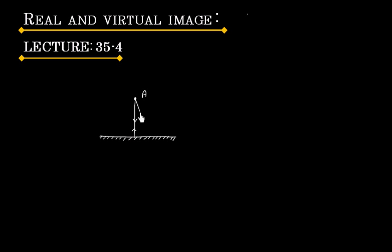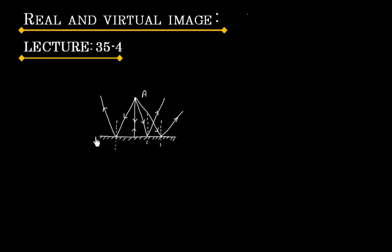Now if I consider another ray, it will make some angle to the normal and it will be reflected back with the same angle. Similarly we can consider rays on this side — these will also be reflected back. Now the reflected rays will never meet; you can see the reflected rays are divergent rays.